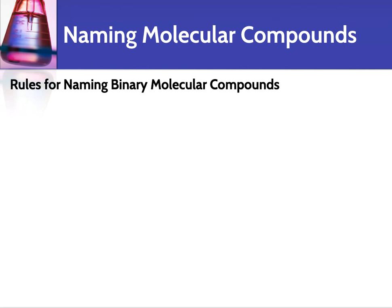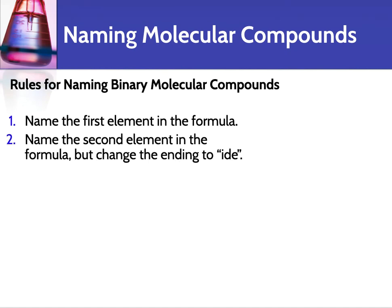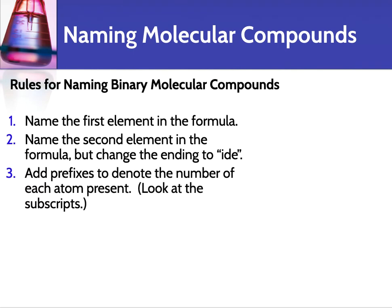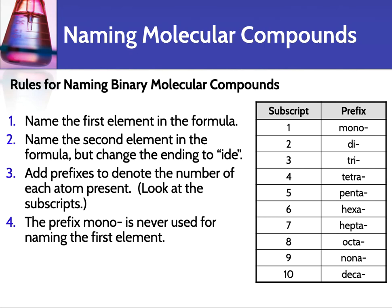So how do we name a binary molecular compound? First, you name the first element in the formula. Then you name the second element and change the ending to -ide. So far it's similar to naming ionic compounds. The difference with molecular compounds is you have to add prefixes to denote the number of each atom present. You look at the subscript to see how many of each atom there is, and then you add the appropriate prefix as shown in the table.